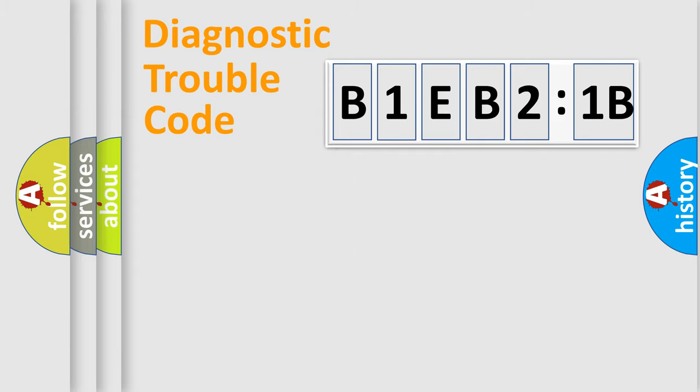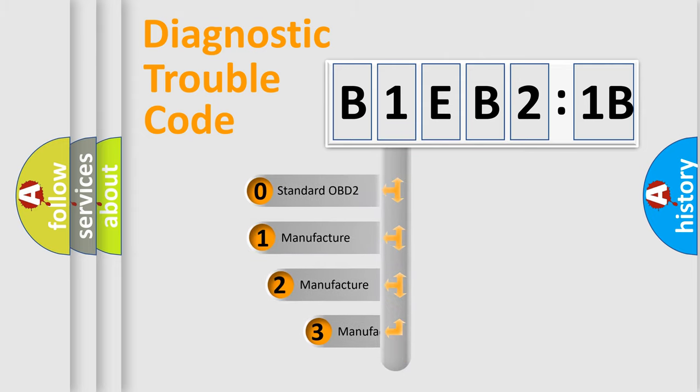Powertrain, Body, Chassis, Network. This distribution is defined in the first character code.